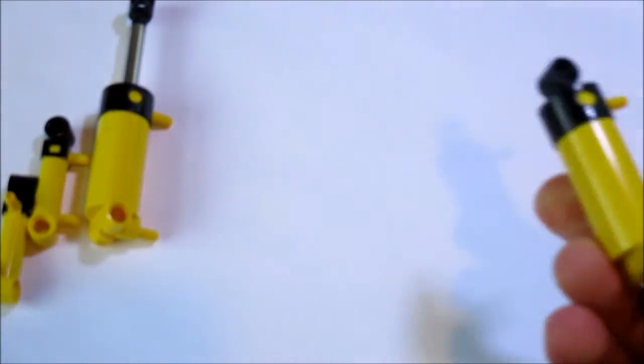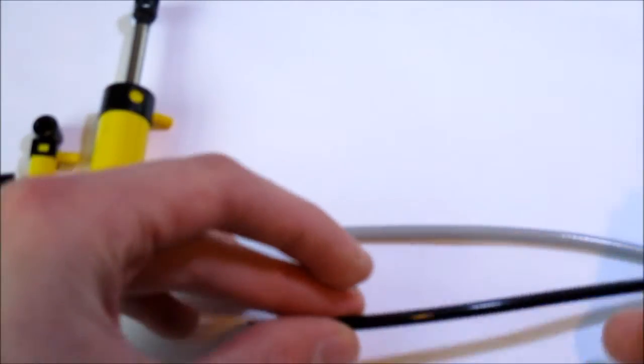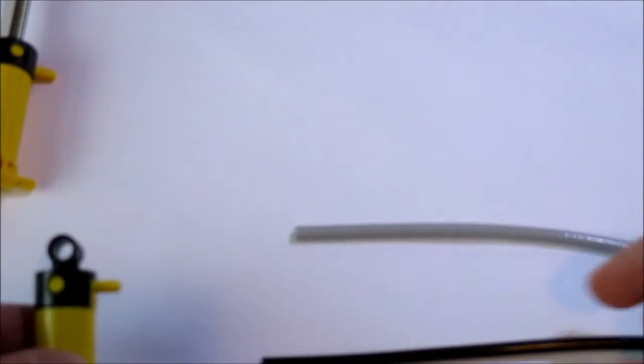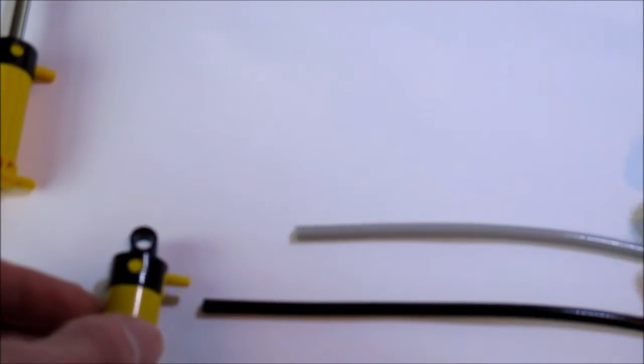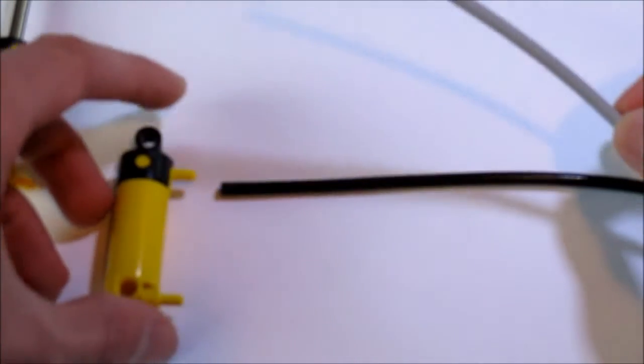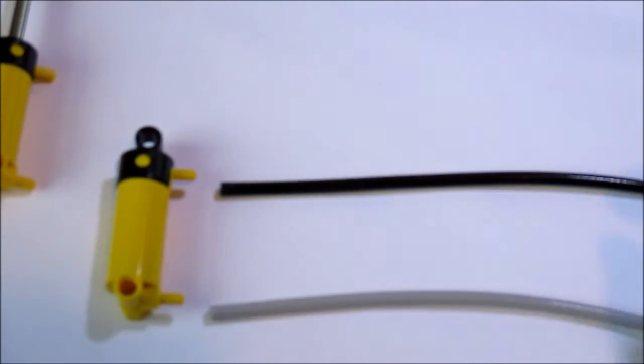As I mentioned in the previous video in the series, that's the whole reasoning behind using two different colored tubes. You can use the black tubes for contracting the piston and the gray tubes for extending the piston.